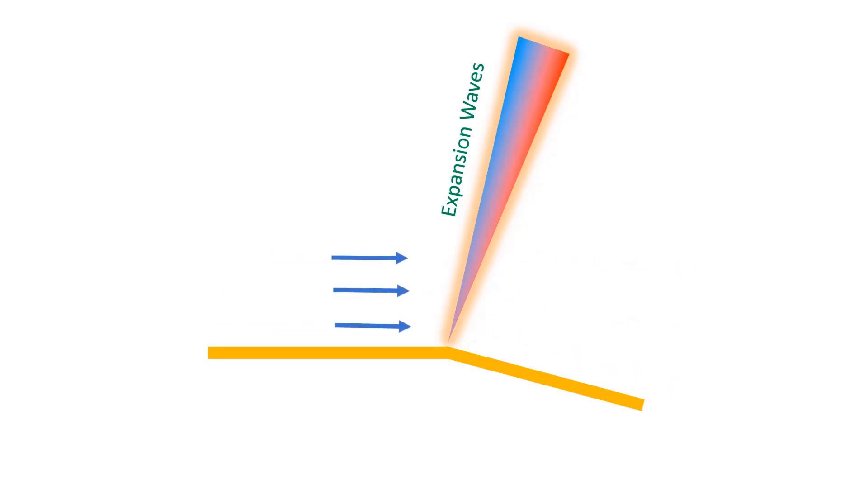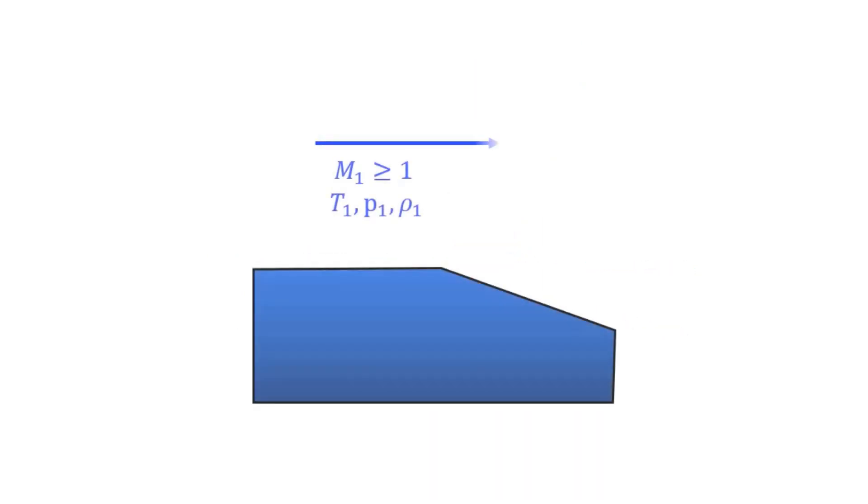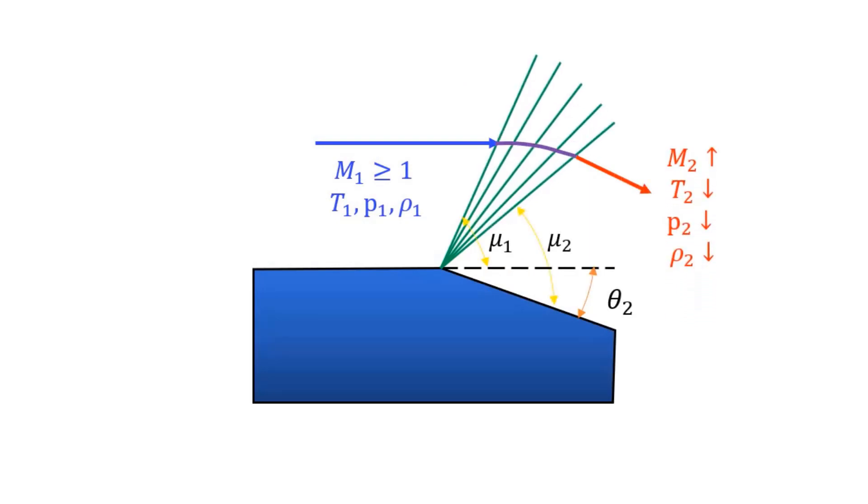Just like shock waves, the flow properties change at the downstream side of the expansion fan. As we can see, the Mach number increases but at the same time, the static pressure, temperature and density decrease. The expansion fan is basically a mechanism for supersonic flow to expand without violating the laws of thermodynamics.